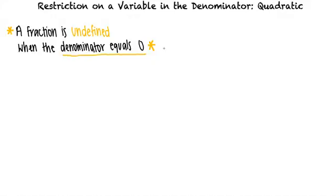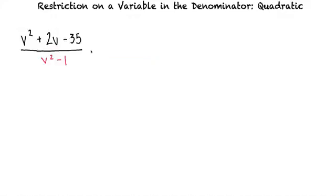Let's take a look at an example: (v² + 2v − 35) over (v² − 1). We want to find what values of v make the expression undefined. We have the quadratic v² − 1 in the denominator of the expression. And since the expression is undefined when the denominator equals 0, we must find what values of v make v² − 1 equal 0. We can do this by setting v² − 1 equal to 0.